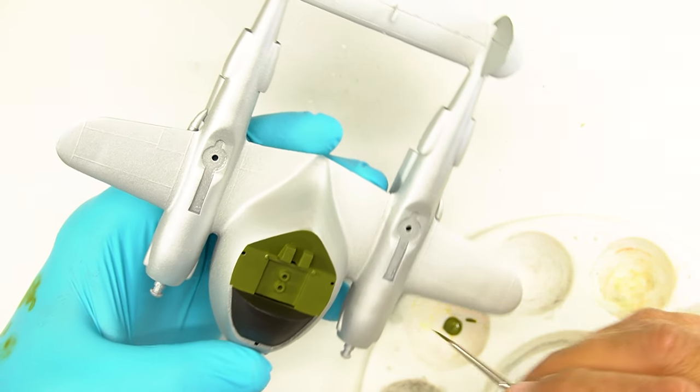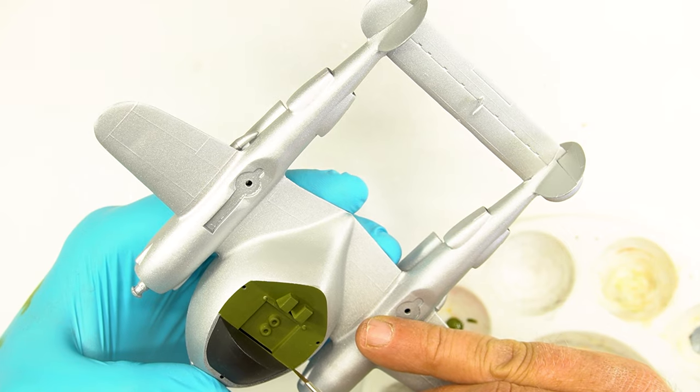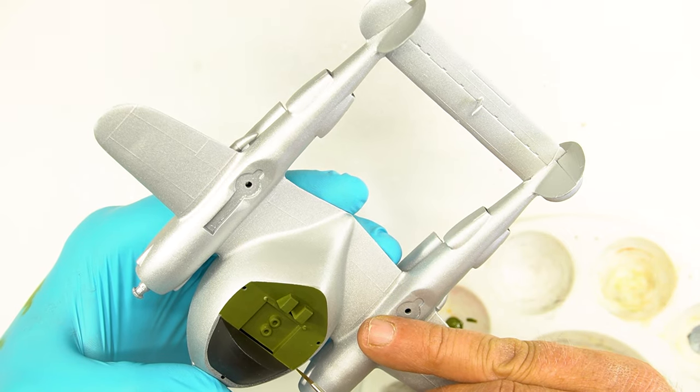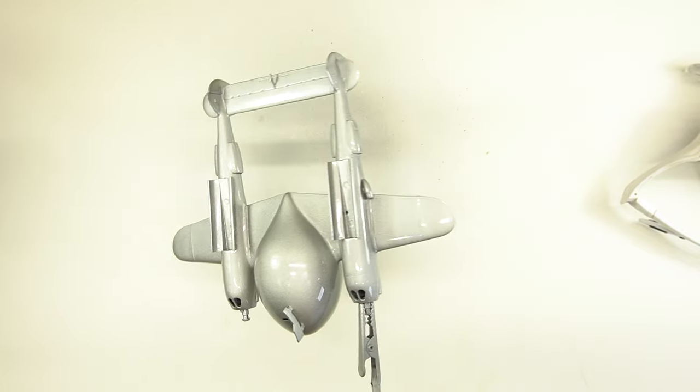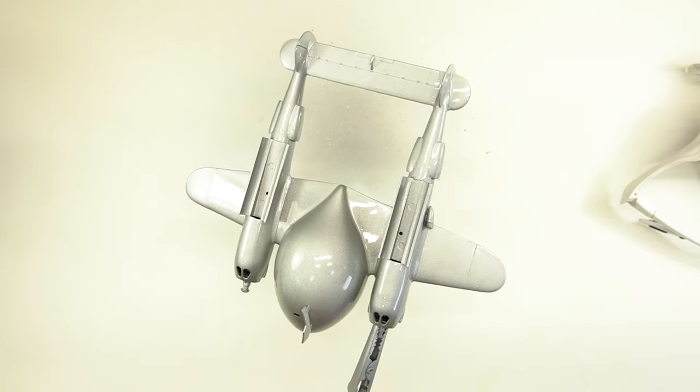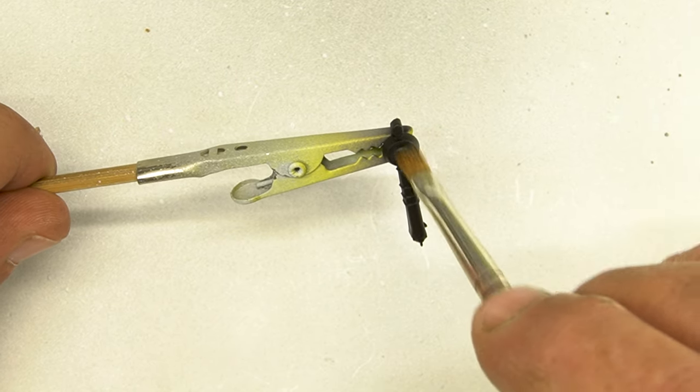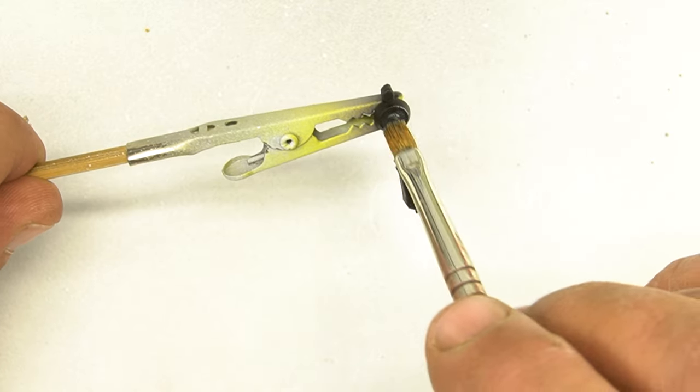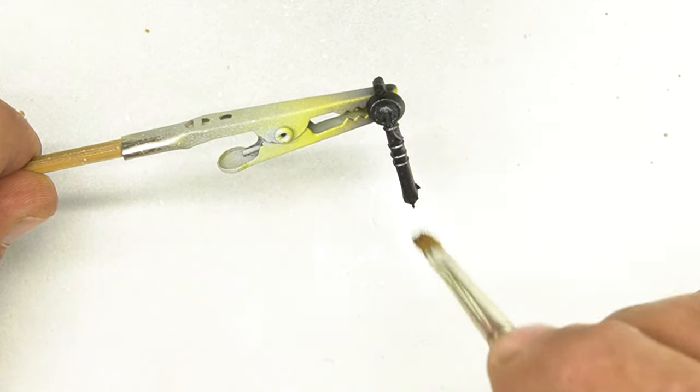Now that all the paint is done I've sealed the paint in with Mr. Super Clear gloss to make sure that when we're doing decaling we don't lose any of the paint work we already did. Next thing we're going to do is we're going to hit the superchargers with a little dry brushing. We just used Ammo by Mig flat aluminum, dry brushed the piece and made it look pretty nice.